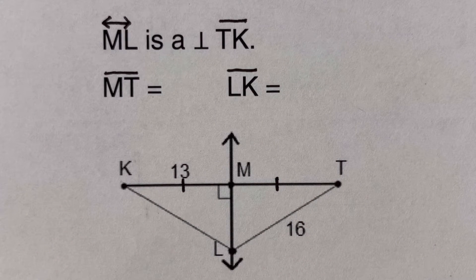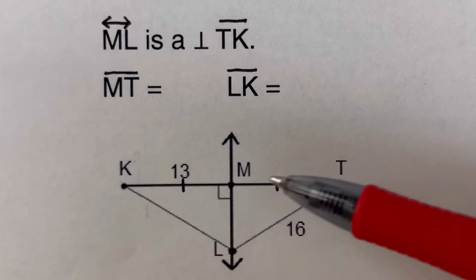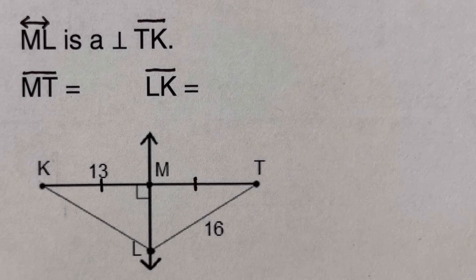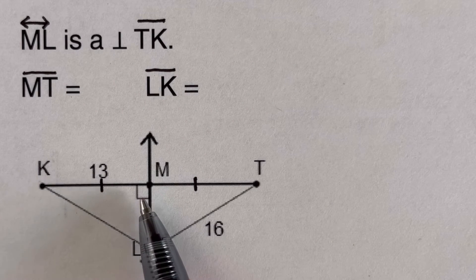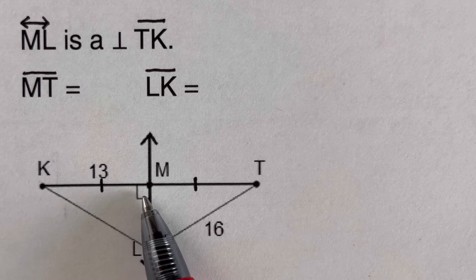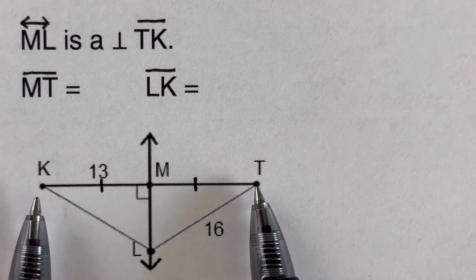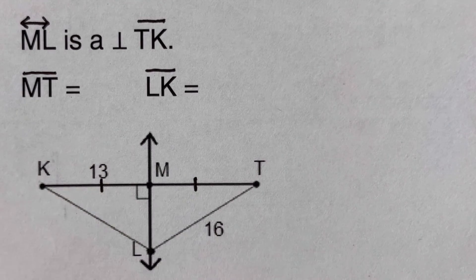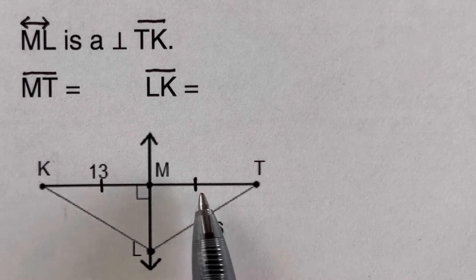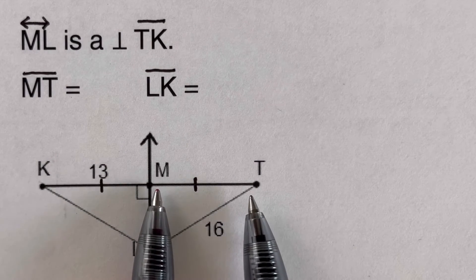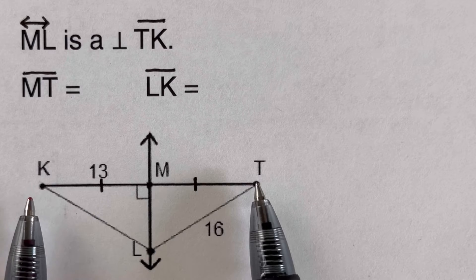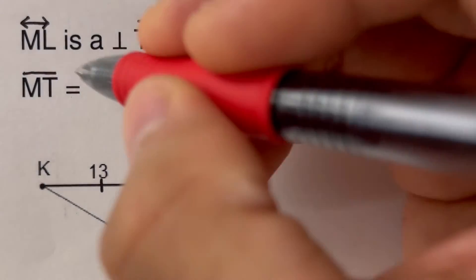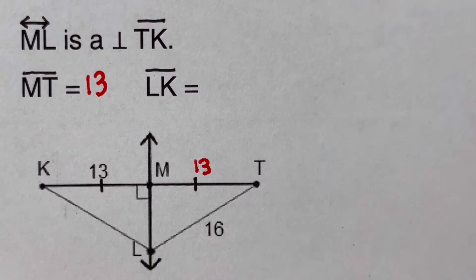Looking at this problem: line ML is a perpendicular bisector to segment TK. The two conditions are met — there is a small square indicating 90 degrees, and TK is cut into two pieces: KM and MT. We are asked to determine MT. Since TK was bisected into two equal pieces and KM is 13, then MT is also 13.